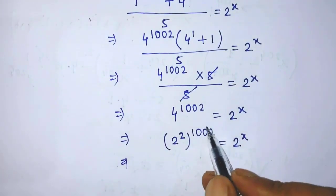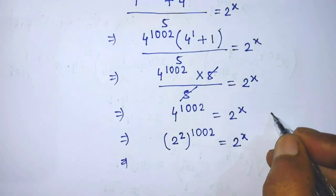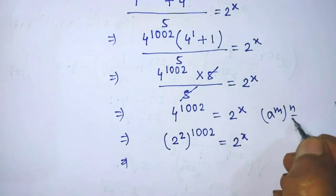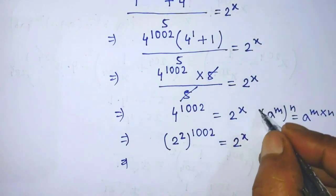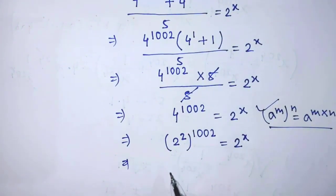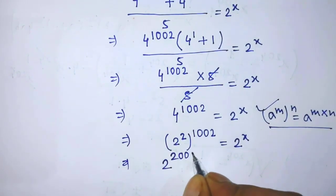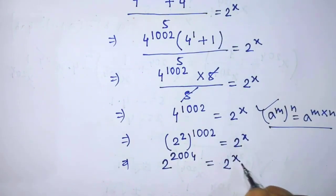To simplify this exponential form, we apply the formula: a to the power m, whole to the power n, is equal to a to the power m times n. According to this formula, we can write on the left hand side 2 to the power 2004 is equal to 2 to the power x.